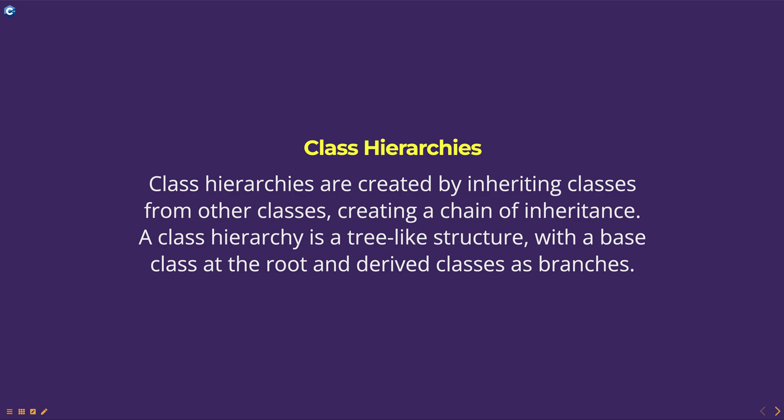A class hierarchy is a tree-like structure with a base class at the root and derived classes as branches. This allows you to create a general base class with common features and then create specific derived classes that inherit and extend the features of the base class. Class hierarchies can be used to model real-world objects and their relationships, as well as to improve code reuse and modularity.